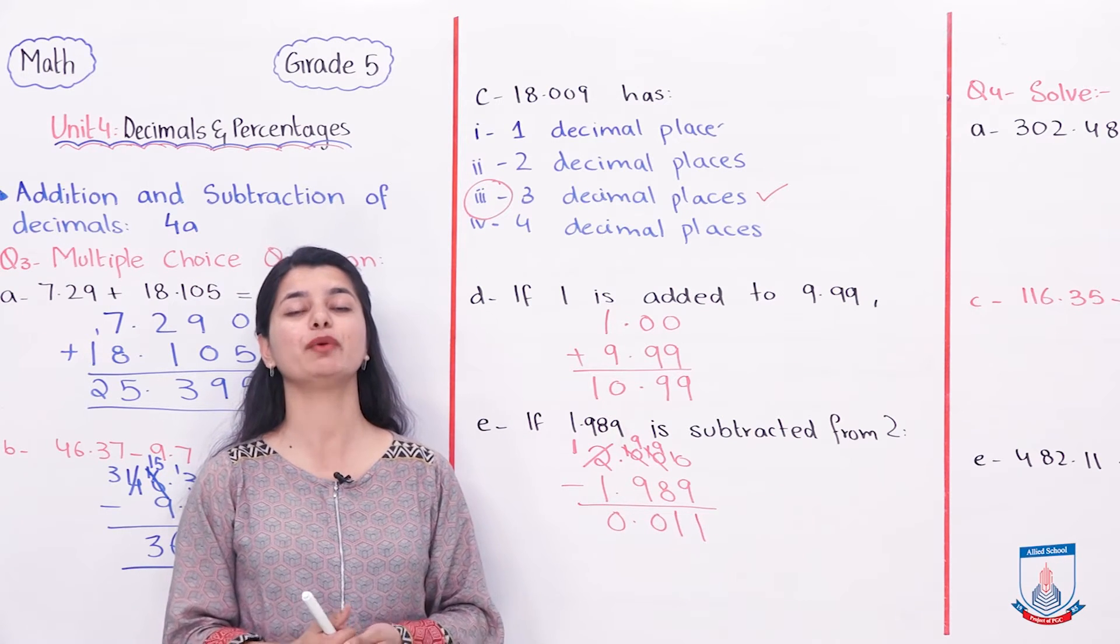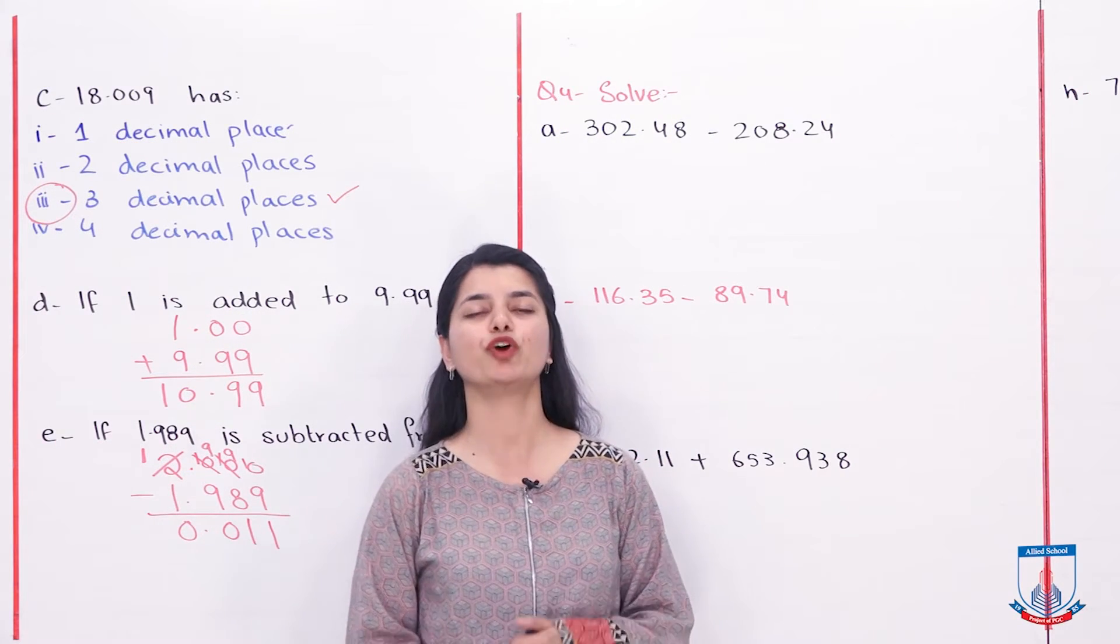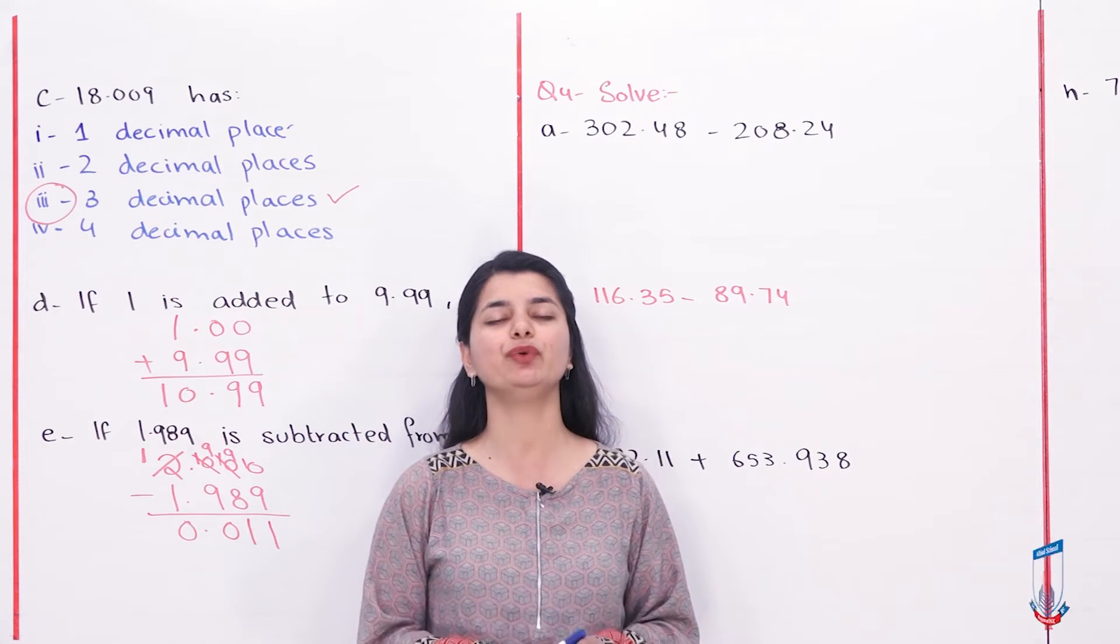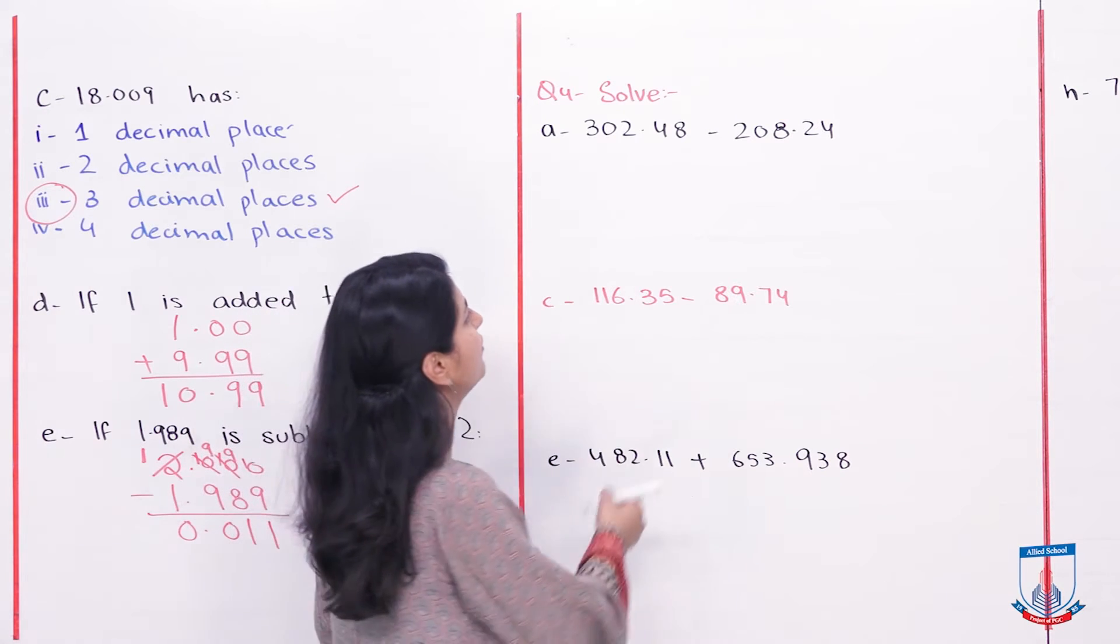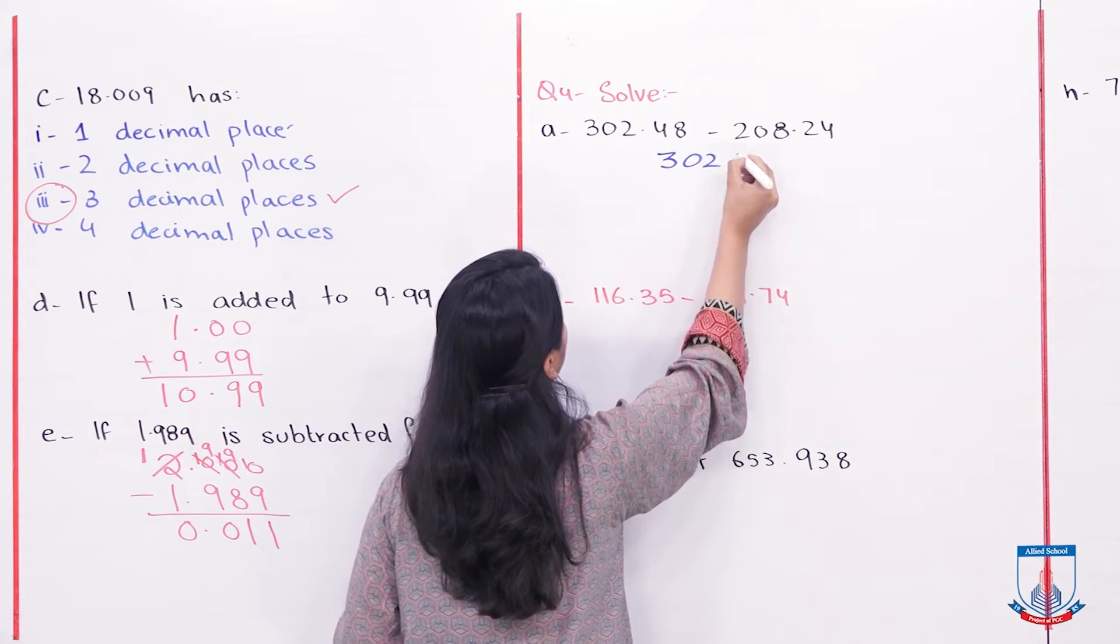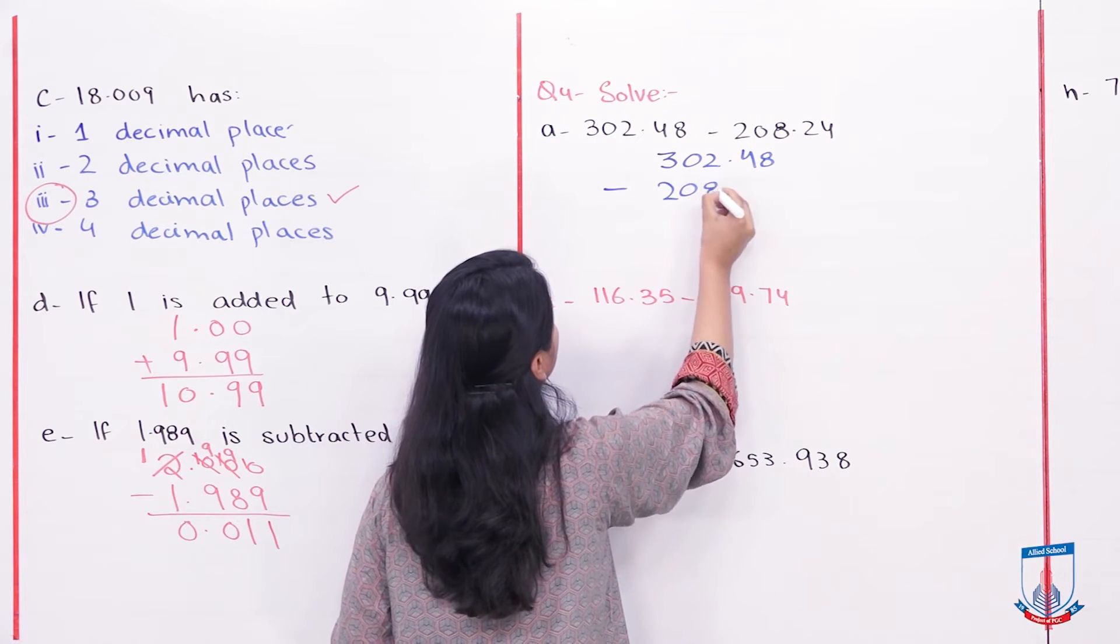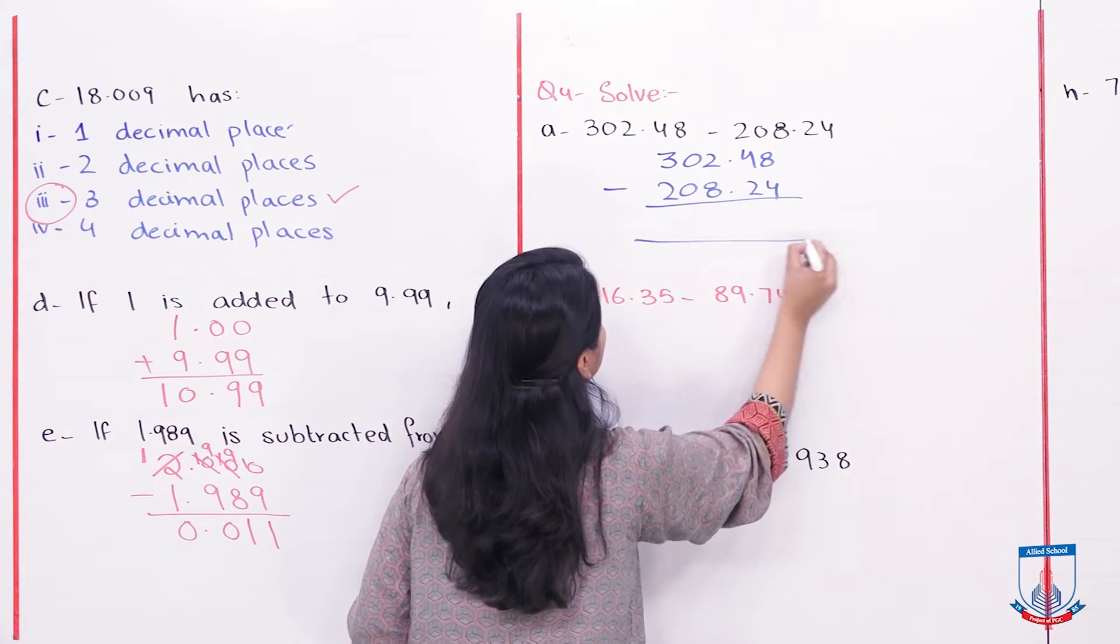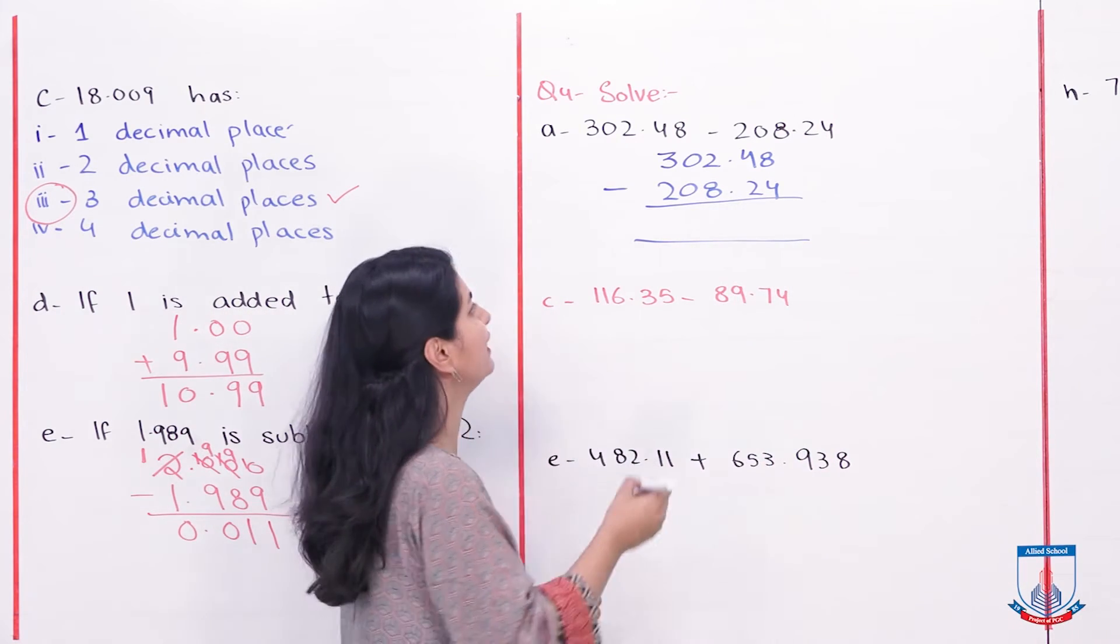What do you have to do in question number 4? You simply have to solve the questions, you have to add and subtract. Now let's look at question number 4 part A. 302.48 minus 208.24. Are these like decimals? Yes, definitely. There are two decimal places. Let's subtract them. 8 minus 4 is 4. 4 minus 2 is 2, decimal.